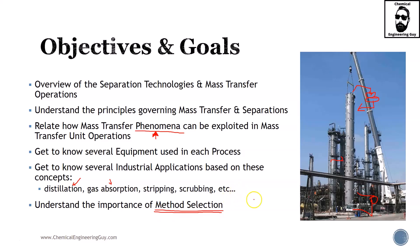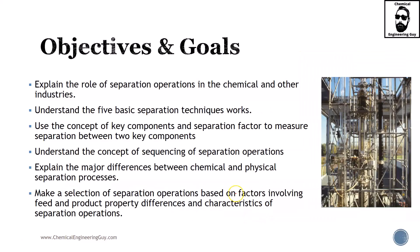Understand the importance of method selection — this is one of the interesting parts of this course. It essentially asks: which will be the best case for a separation? For example, if you have coffee and you want to extract caffeine from it, what will be the best approach? After this course, hopefully you will know which one is best.